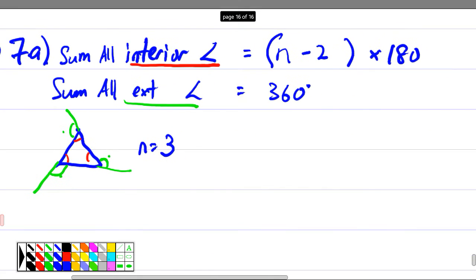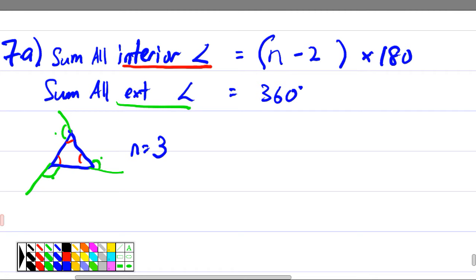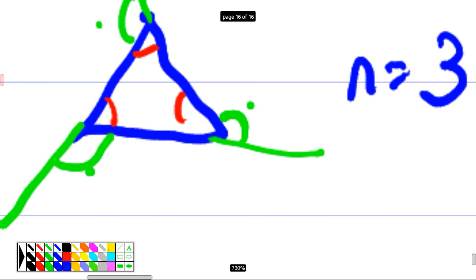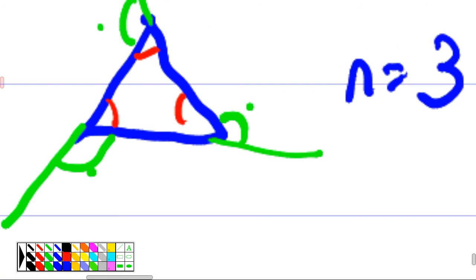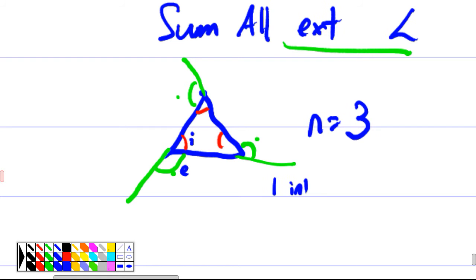Now the question says: find the size of the exterior angle. Which formula is easier — the first or the second? The second one, of course. The red means interior, and this means exterior. What's the relationship between interior and exterior? One interior plus one exterior equals 180.